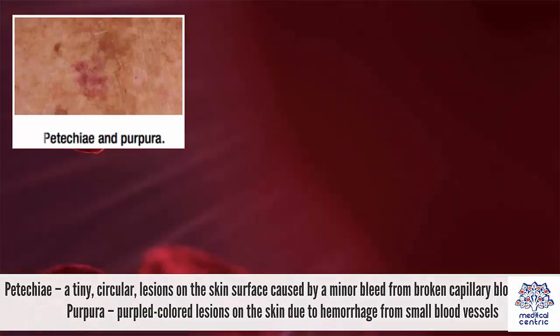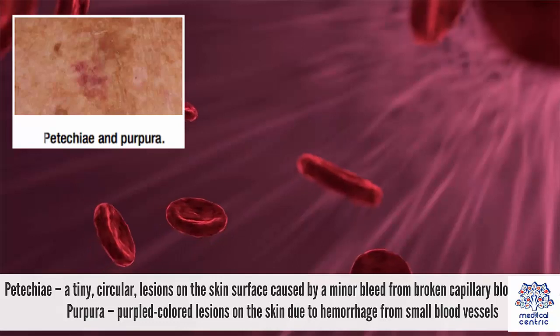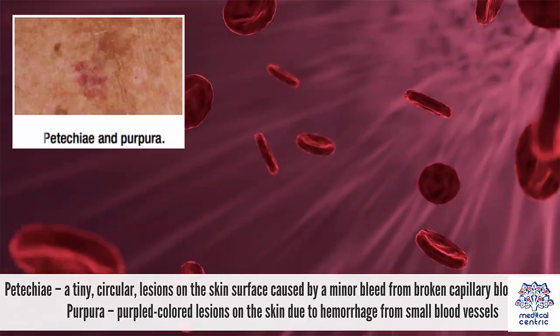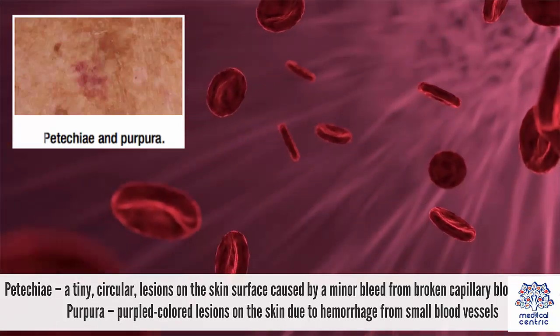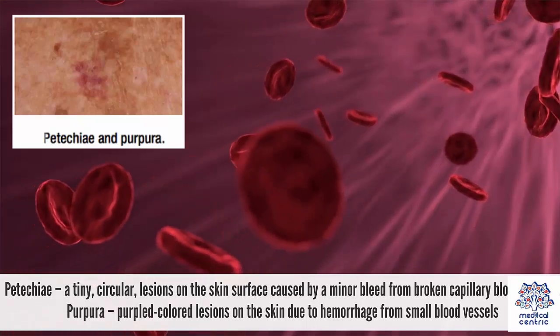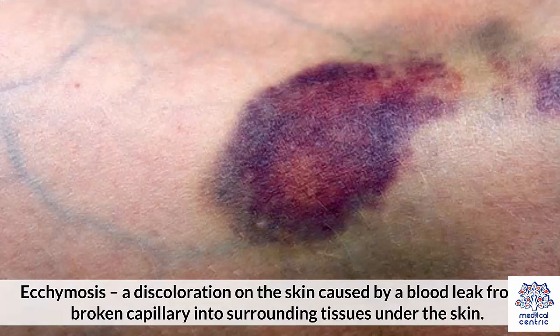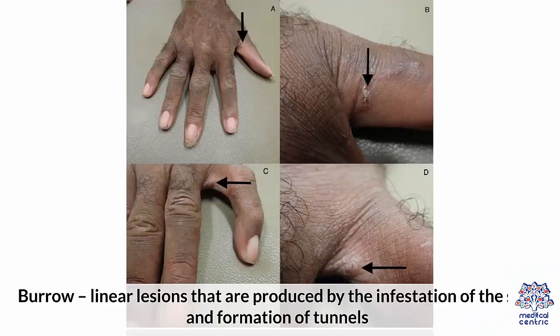Petechiae are tiny, circular lesions on the skin surface caused by a minor bleed from broken capillary blood vessels. Purpura are purple-colored lesions on the skin due to hemorrhage from small blood vessels. Ecchymosis is a discoloration of the skin caused by a blood leak from a broken capillary into surrounding tissues under the skin. Burrow are linear lesions produced by the infestation of the skin and formation of tunnels.